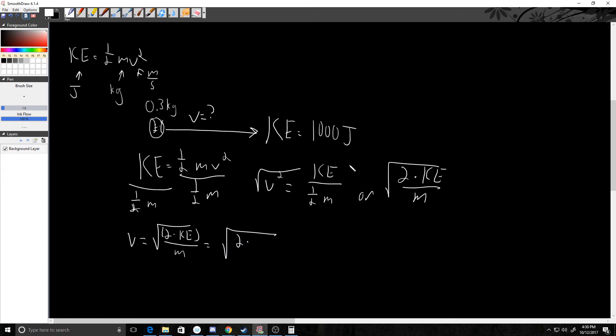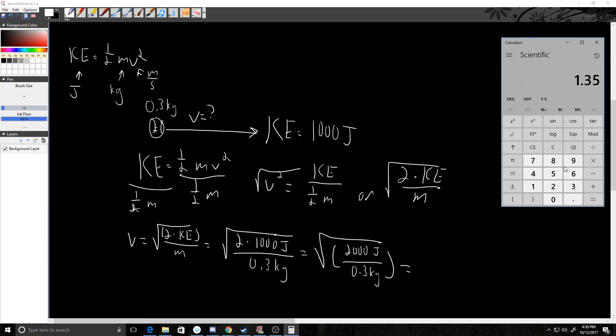So I'm going to take the square root of two times. We said kinetic energy was a thousand joules divided by the mass. We said was 0.3 kilograms. Some of this math that I can do off the top of my head. So I'm taking the square root of 2,000 all over 0.3 kilograms. Let's get that calculator back up. So we got 2,000 divided by 0.3. So we're looking at 6,666. But I need to take the square root of that. So let's hit the square root button and it looks like I get 81.6.